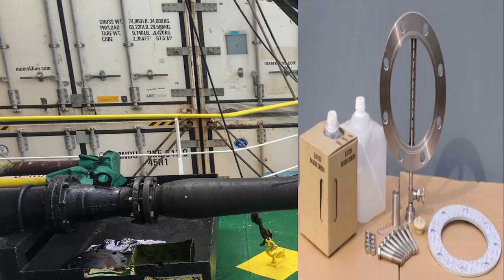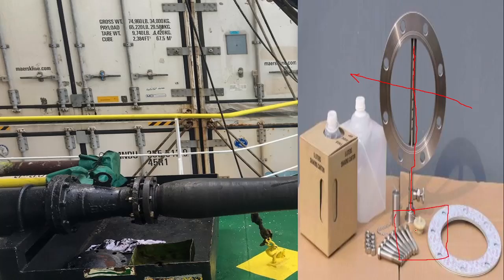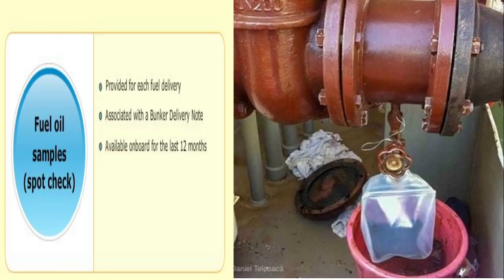Now let's see how you collect the bunker sample. Here a drip tray is fitted — oil flows from the pipe segment through a hole, and you collect it in a drum. That is one method. The second method is if your bunker connection is provided with a flange system and a valve is fitted, then you can attach a sample collecting bottle directly there.